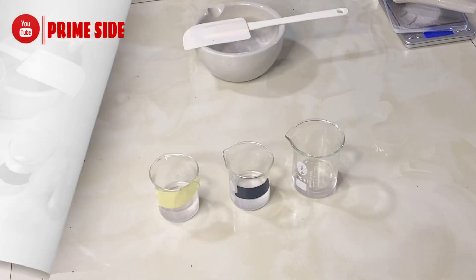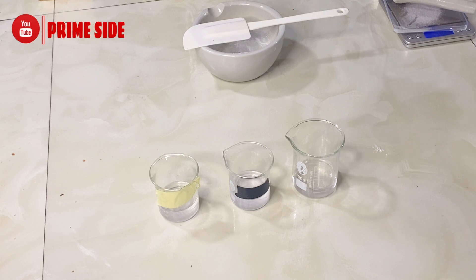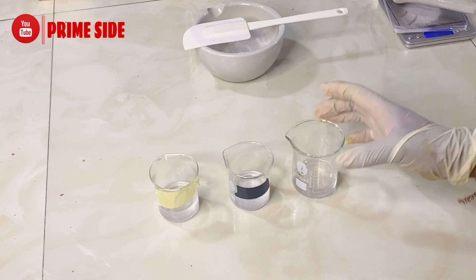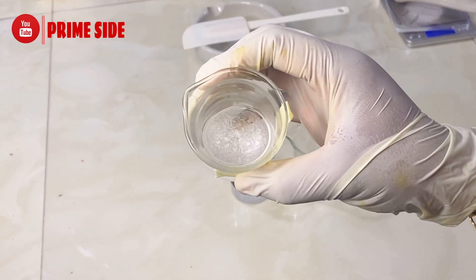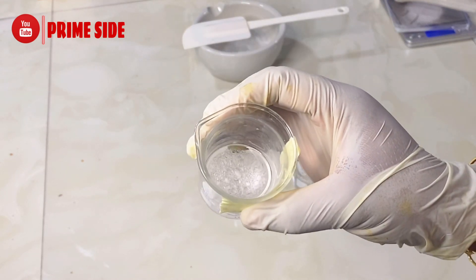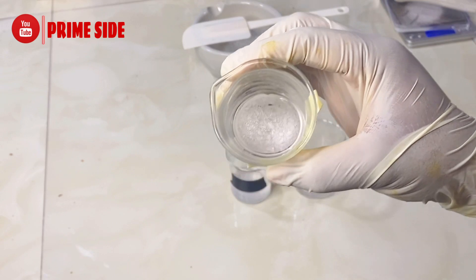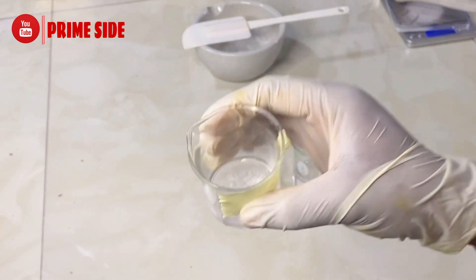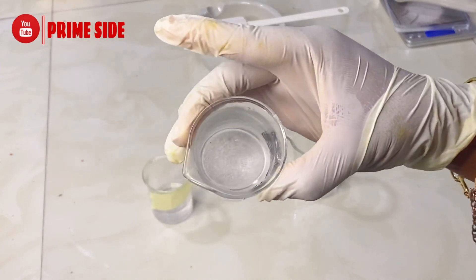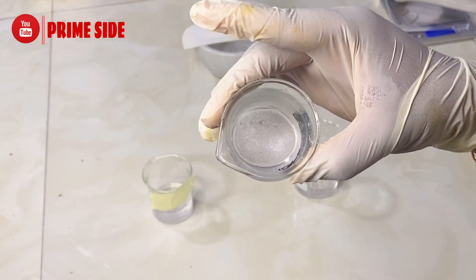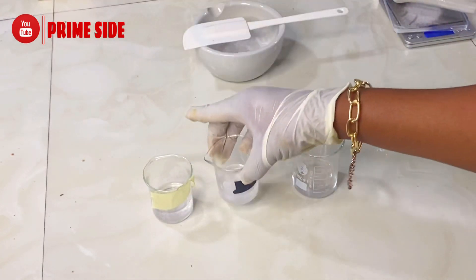So after 15 minutes again, I've come back to check my solutions. This is my solution of salicylic acid with propylene glycol, and as you can see there are still crystals in it yet to be dissolved.